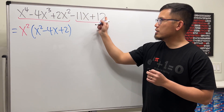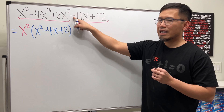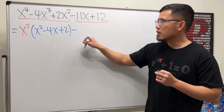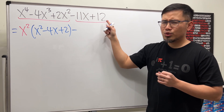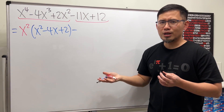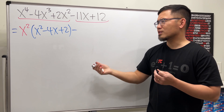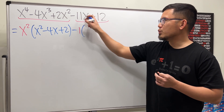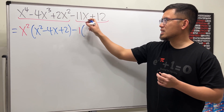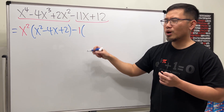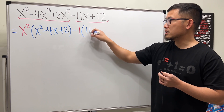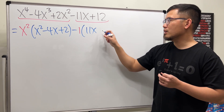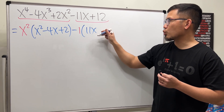And then for this right here, we have a minus here, so write that down right away. 11 and 12 — there's no common factor besides 1, so it's like factoring out 1. And then we will have this divided by negative 1: positive 11x, and this divided by negative 1 is minus 12.